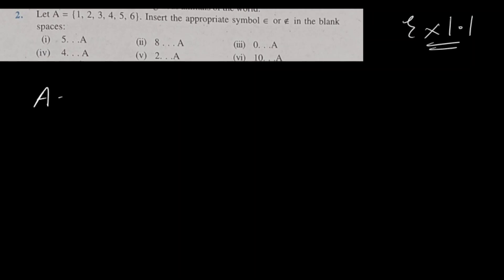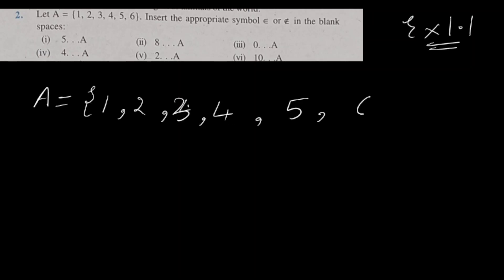In question number 2, one set is given to us. The name of the set is A. Its elements are 1, 2, 3, 4, 5 and 6. We write the set with a capital letter and then elements inside the curly braces. So elements are mentioned here: 1, 2, 3, 4, 5 and 6.